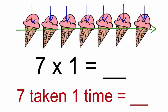There are seven ice creams. So can I say seven into one is equal to seven, or seven taken one time is seven.